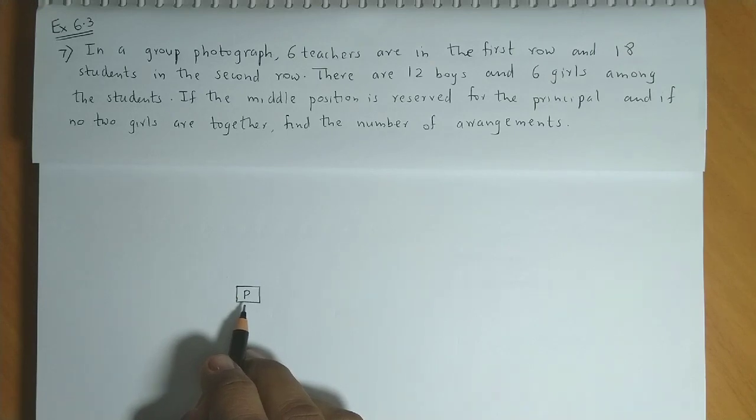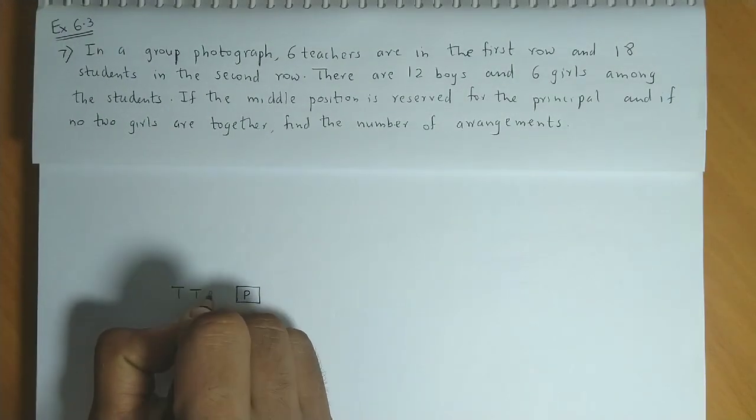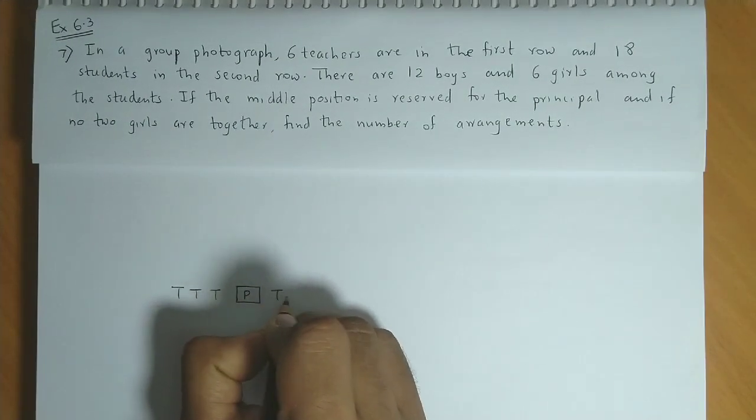Now, there are 6 teachers and the principal is in the middle. So left will be 3 teachers, correct? And right will be 3 teachers.